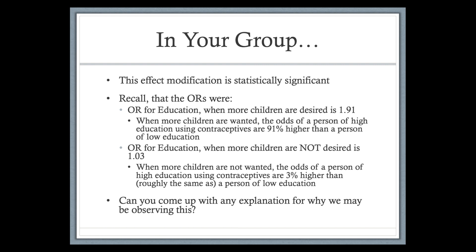Once I took time to sit and think about it, I thought: does someone need a high level of education to know that contraceptives prevent pregnancy? Probably not — high education or low education, they probably all know that contraceptives can help prevent unwanted pregnancies. That's why we're seeing an odds ratio of 1.03 when more children are not desired. But when they do want more kids, the odds ratio is 1.91, and I hypothesize this is because there's probably a lot of family planning going on among those with higher education.